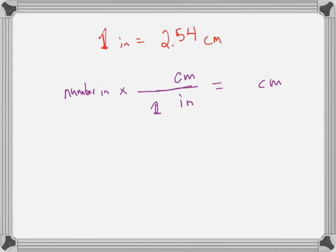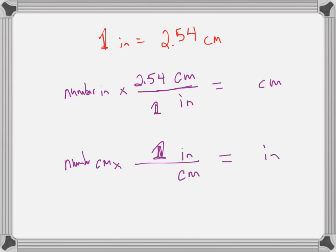What if we wanted to convert into inches? We'd start with some number in centimeters, look at our conversion factor, and put inches in the numerator of our answer. In our conversion factor, inches need to show up in the numerator and centimeters in the denominator so the units cancel. Make sure you put the numbers in correctly: 1 in front of inches and 2.54 in front of centimeters. Go slowly — set up your units, then put in your numbers.